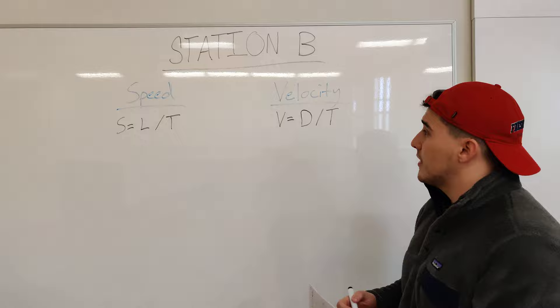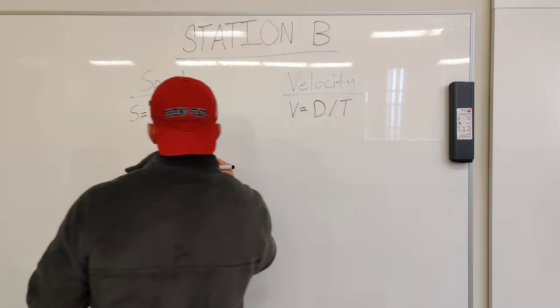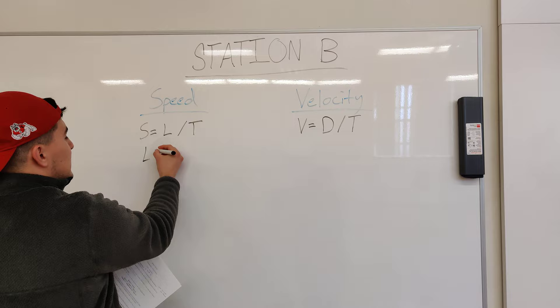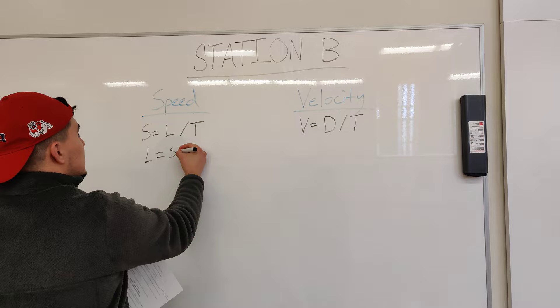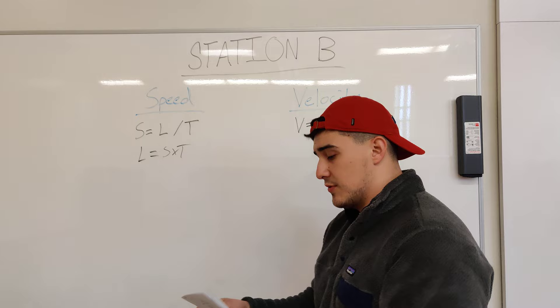For example, in problems B1 and B2 at our station, you might have to switch the equations around. If you have speed and time but not length, you can change the equation to length equals speed times time (L = S × T), which is what we're going to do.